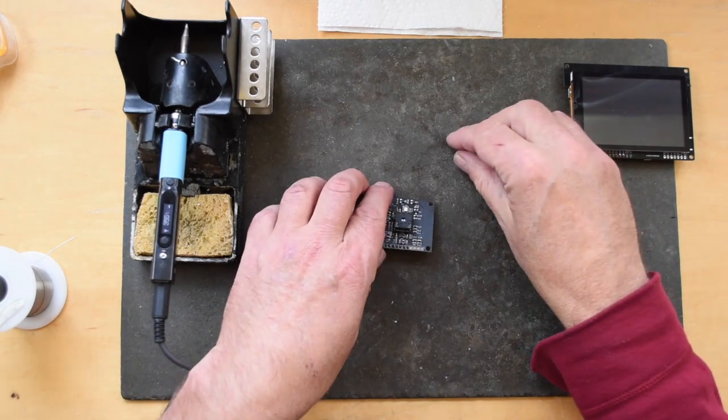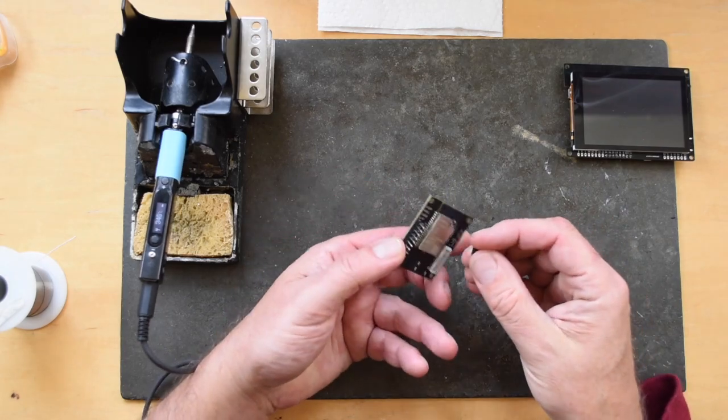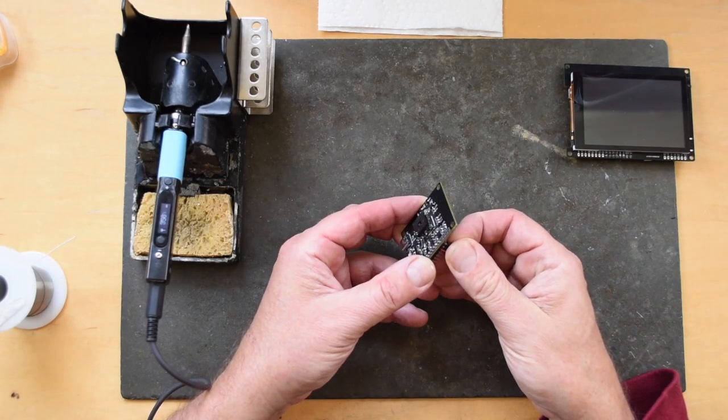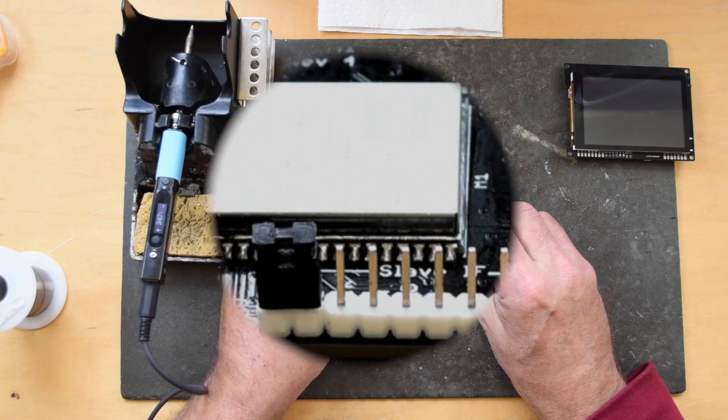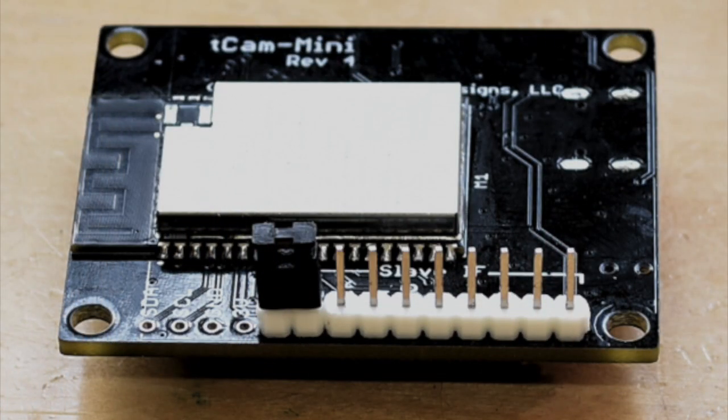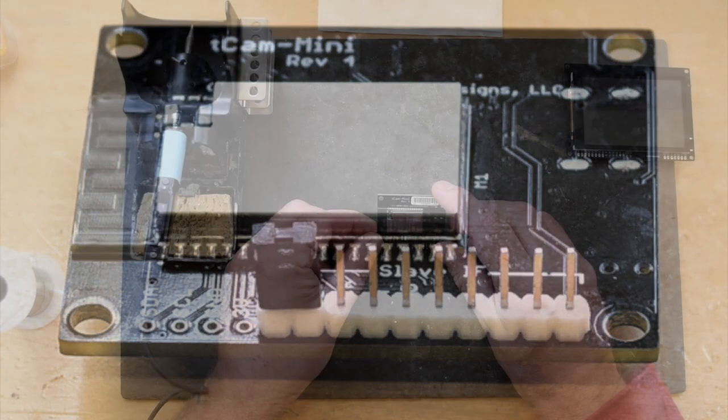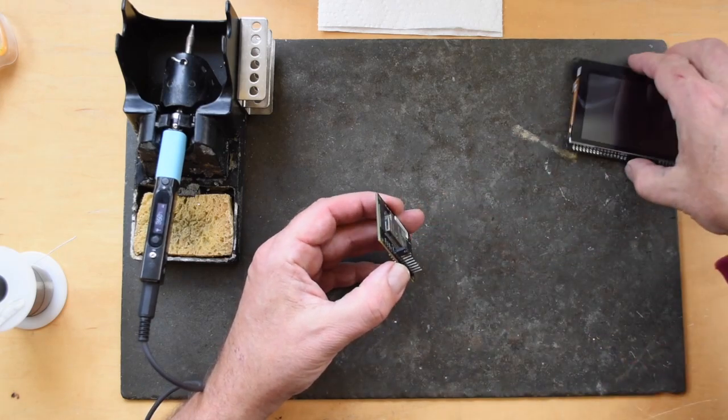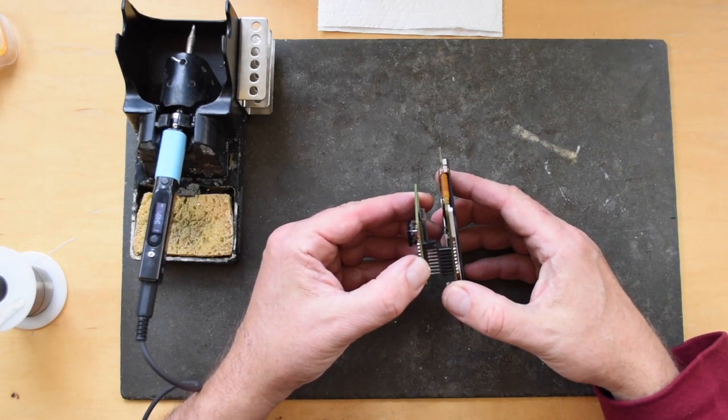Plug the jumper header onto the mode and ground pins. This tells the TCAM Mini will be using the slave interface instead of Wi-Fi. Then you can test plugging the two boards together.